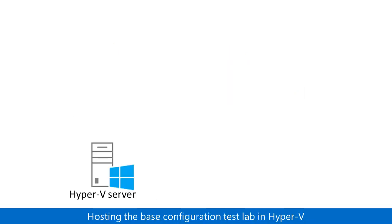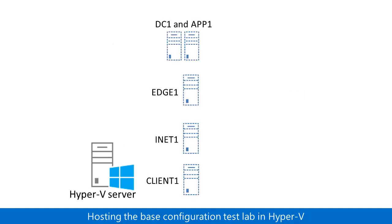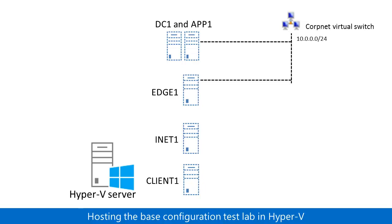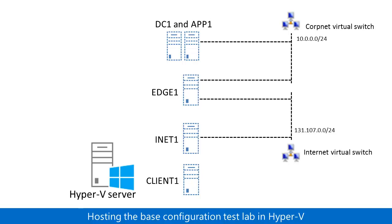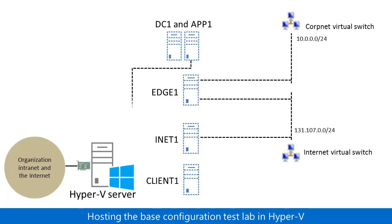The key elements of hosting the Base Configuration Test Lab on a single Hyper-V Server are the following. All five computers — DC1, App1, Edge1, iNet1, and Client1 — are virtual machines running on the physical Hyper-V Server computer. The CorpNet subnet is implemented as the CorpNet private virtual switch. The Internet subnet is implemented as the Internet private virtual switch, and Client1 can be connected to either switch. The Hyper-V Server has at least one physical network adapter that connects to your organization's intranet and the Internet. You can use this connection and an external virtual switch on the Hyper-V Server to temporarily connect a Test Lab computer to the real Internet, rather than the isolated Internet subnet — for example, to install software or updates.